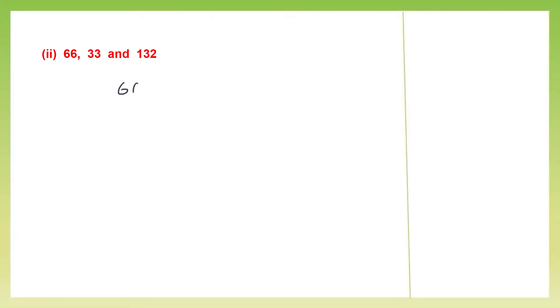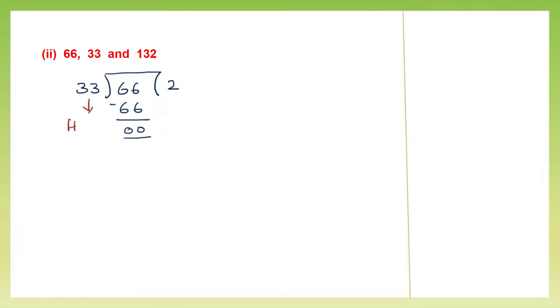Question 4, number 2: 66, 33 and 132. Put the bigger number inside and do the division. The smaller number is 33; 33 into 2 is 66, so minus we get 0. So here 33 is the HCF of 66 and 33.